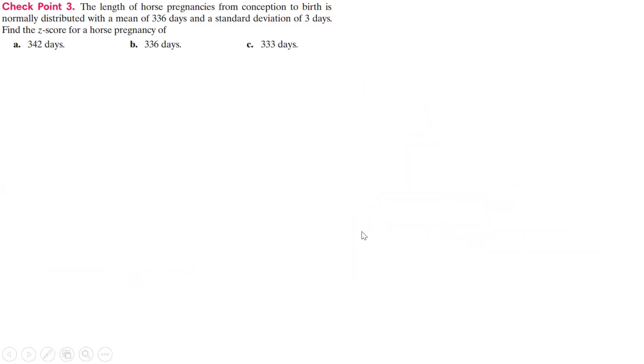Here they want us to find z-scores. The length of horse pregnancies from conception to birth is normally distributed with a mean of 336 days and a standard deviation of 3 days. Find the z-score for horse pregnancy of 342 days, 336 days, and 333 days.